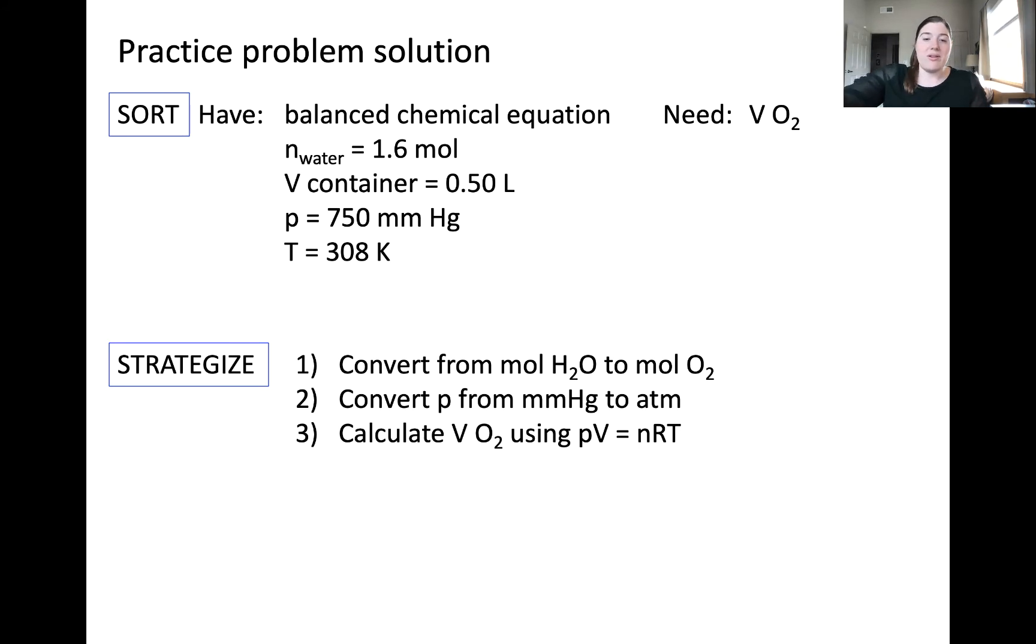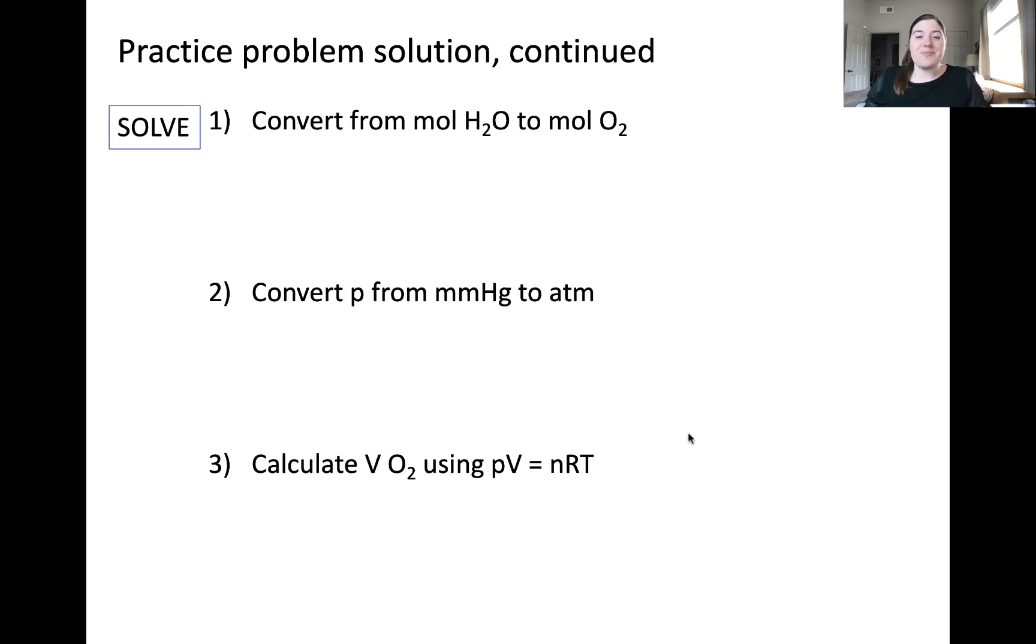Then we'll convert pressure from millimeters of mercury to atmospheres. The reason why we need to do this is that we can then calculate the volume of oxygen using PV equals nRT assuming that pressure, moles, and temperature are all in the correct units. Let's walk through each step.